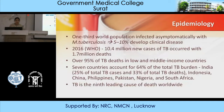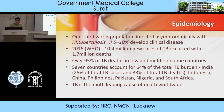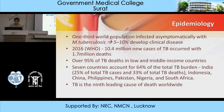Epidemiology: one-third of the world population is asymptomatically infected with M. tuberculosis; 5 to 10% develop clinical disease. In 2016, WHO reported 10.4 million new cases of tuberculosis with 1.7 million deaths. Over 95% of TB deaths occur in low- and middle-income countries. Seven countries account for 64% of the total TB burden: India (25% of total TB cases and 33% of TB deaths), Indonesia, China, Philippines, Pakistan, Nigeria, and South Africa. TB is the ninth leading cause of death worldwide.